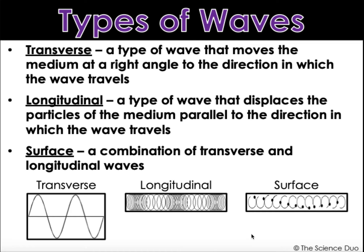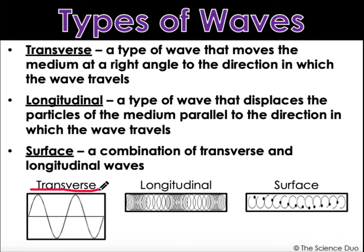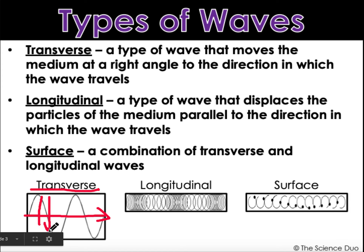There are different types of waves. The first one is called a transverse wave. A transverse wave is a type of wave that moves the medium at a right angle to the direction in which the wave is traveling. If you look down here, this is a transverse wave — this is a picture of what one looks like. It goes up and down, but the wave is moving up and down at a right angle to the direction that it is traveling.